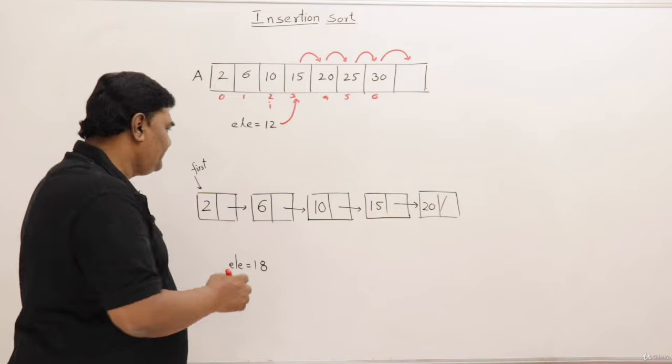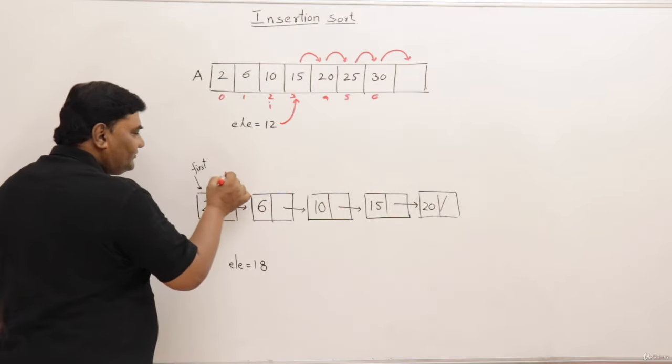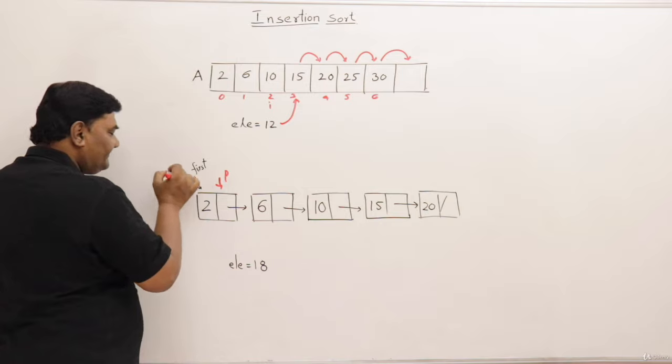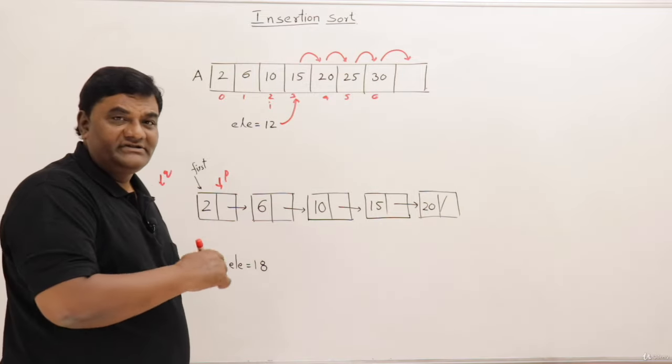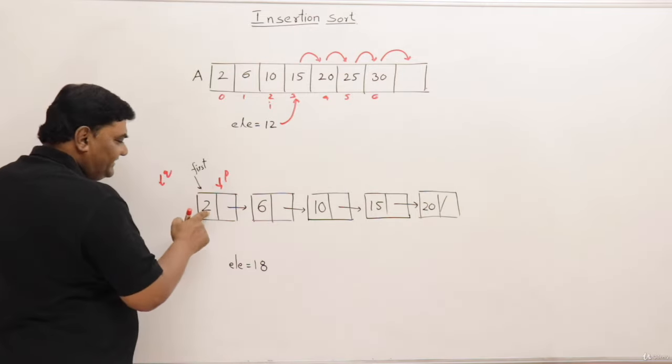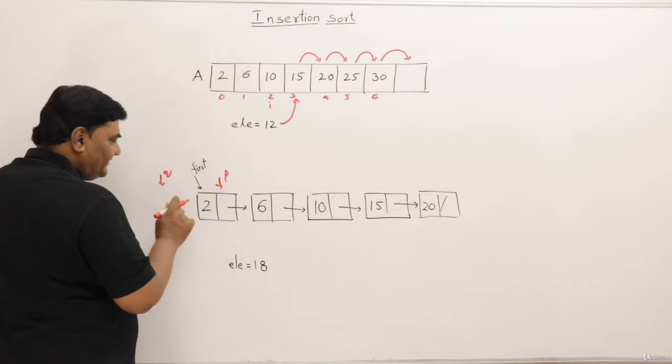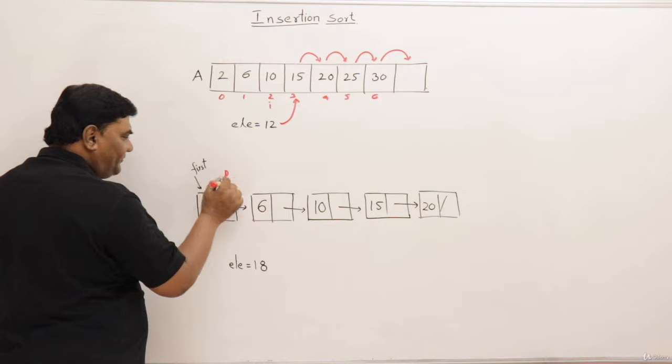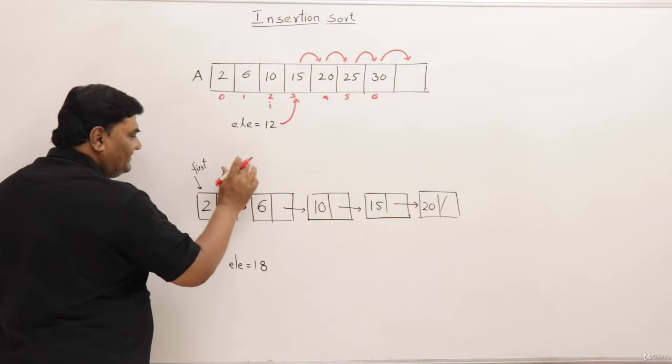That's all. So for finding its position, I will take a pointer to traverse a linked list. Then also I will take one tail pointer. Now I am showing you the procedure how to insert it. Check P's data. That is smaller than this one. So move P to next. But before that bring Q upon P and then move P.